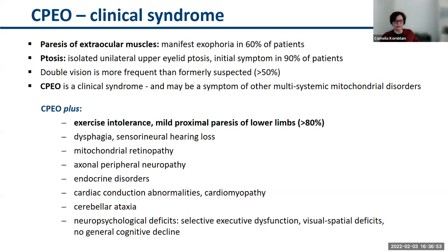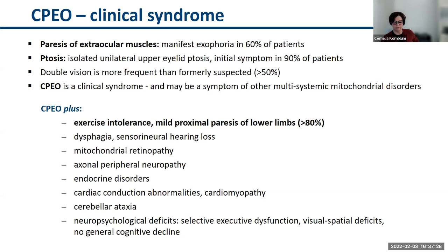CPEO is a clinical syndrome but may also be a symptom of other multisystemic mitochondrial disorders. Most patients have exercise intolerance and proximal paresis of lower limbs. There may be axonal peripheral neuropathy, cardiac conduction abnormalities, cardiomyopathy, cerebellar ataxia, quite frequent dysphagia, hearing loss, and neuropsychological deficits usually affecting frontal lobe functions. Kearns-Sayre syndrome is historically defined as CPEO with pigmentary retinopathy, first manifestation before age 20 years, and one of: cerebellar ataxia, cardiac conduction defect, or elevated CSF protein concentration. Cachexia is very common in Kearns-Sayre syndrome and CPEO.